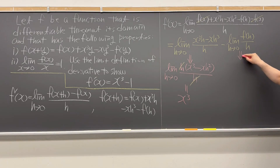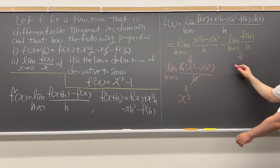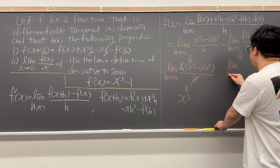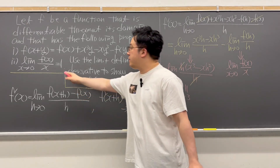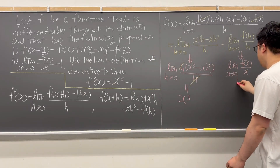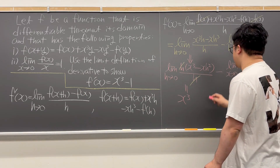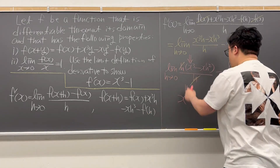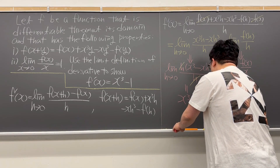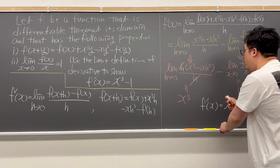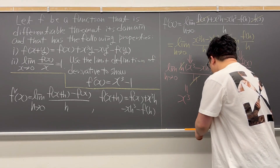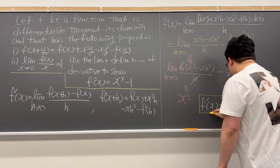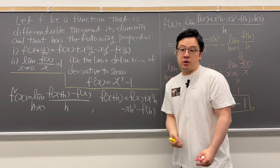For the second limit, the h here is only for notation. If you switch this h to x, this is the same as the limit as x is going to zero of f of x over x, which is already given to be 1. So we just need to subtract these two, meaning f prime of x is equal to x cubed minus 1. We've shown that f prime of x is x cubed minus 1 using only the limit definition of derivative.